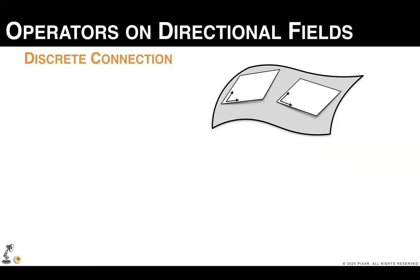Our discretization also applies to operators on directional fields. In this case, we care about the direction of the vectors, but not about the norm of these vectors. For this reason, we need to account for the misalignment between tangent planes. And this can be done by discretizing the connection over a polygon.